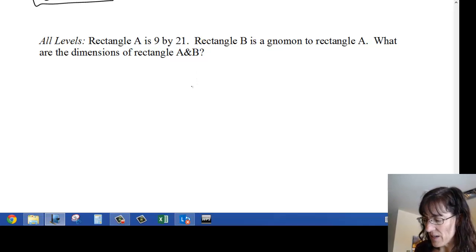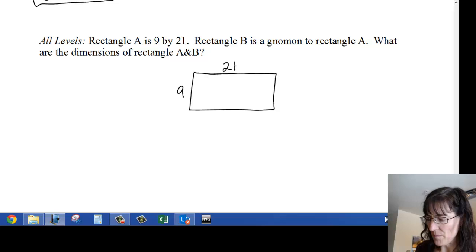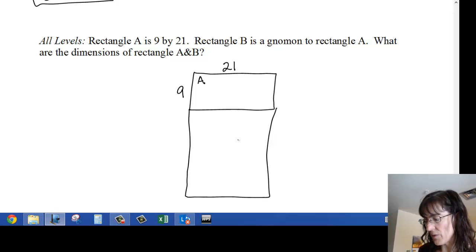Okay, rectangle A is 9 by 21. Rectangle B is a gnomon, and it sounds like it's a real rectangle, so it's a gnomon to A, and that's B, and it's some dimension here by 21. And what are the dimensions of rectangle A and B, which means the two together?